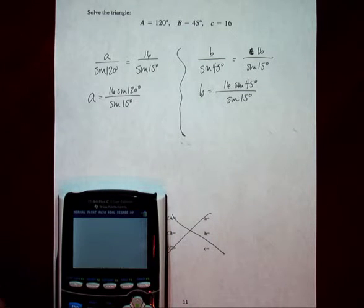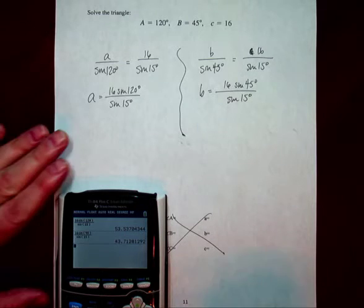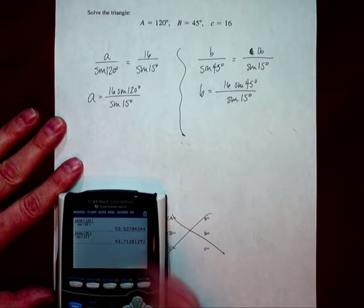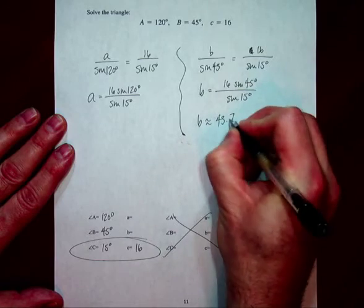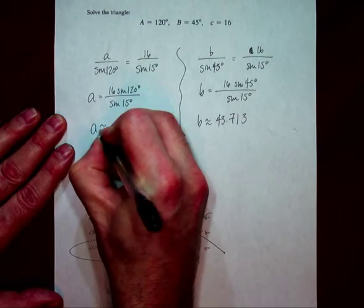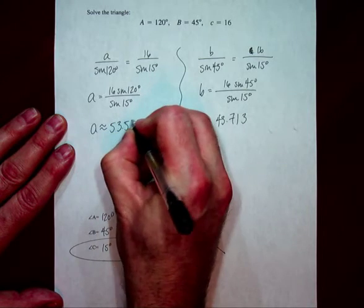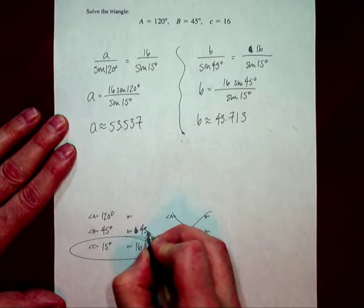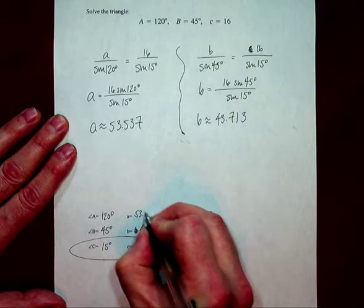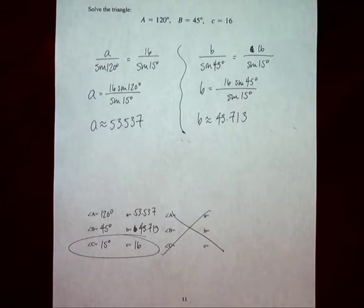So we have A at 16 sine 120 over sine of 15 degrees. And so sine of 45 degrees is going to be, or this B value is 43.713. And this A value is 53.537. So, sorry, that's 43.713 and 53.537. And that is your triangle.